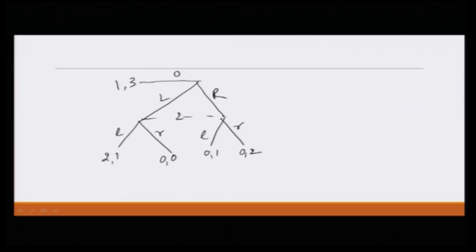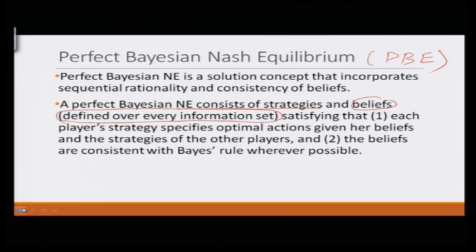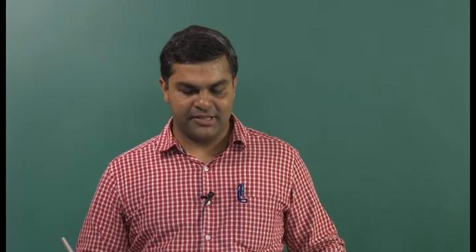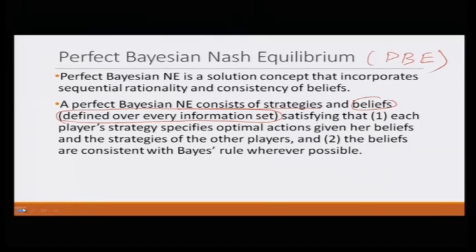Now we have learned the notion of perfect Bayesian Nash equilibrium. Just to recap: perfect Bayesian Nash equilibrium is a solution concept that incorporates sequential rationality and consistency of beliefs. Operationally, a perfect Bayesian Nash equilibrium consists of strategies and beliefs — we called it an assessment — satisfying two conditions: each player's strategy specifies optimal actions given her beliefs and the strategies of the other players, and second, the beliefs are consistent with Bayes rule whenever possible.